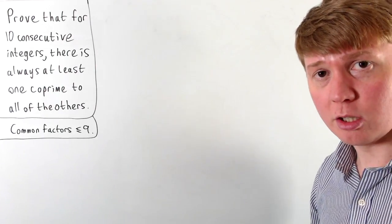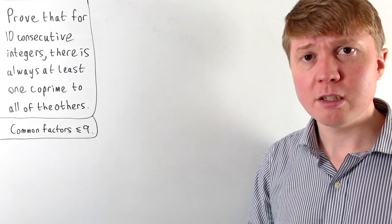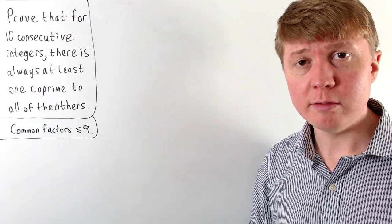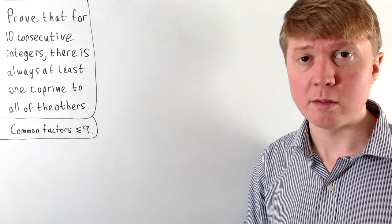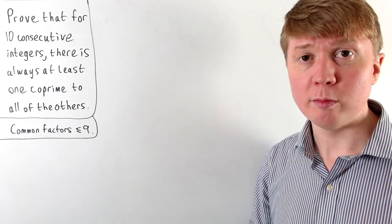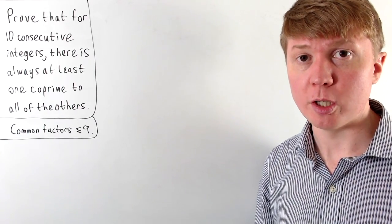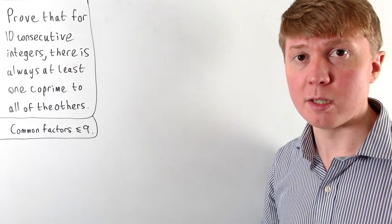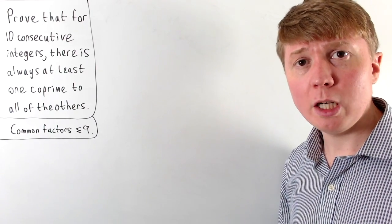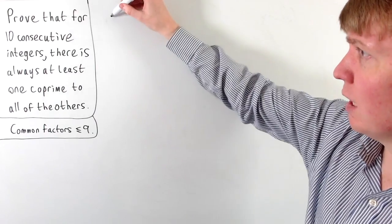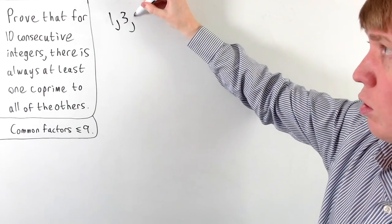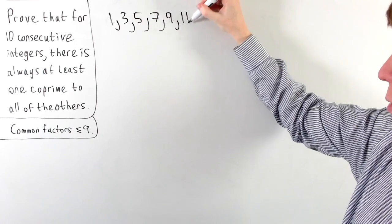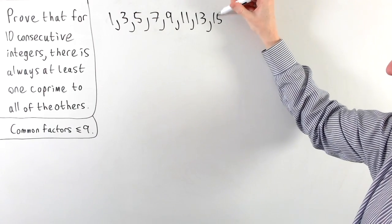Now, to find such an integer, we can first notice that it's not going to be an even number, because we've got lots of even numbers in our list of 10 consecutive integers and they've all got a common factor of 2 with the other even numbers. So we only really need to consider the odd numbers in our list. We've got 10 consecutive integers, which means within this we're going to have 5 consecutive odd integers.